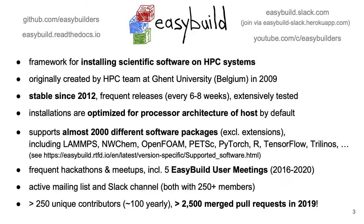Let's start with EasyBuild, which is a tool for installing scientific software on HPC systems. It was created by the HPC team in Ghent back in 2009 and was first released publicly in 2012. Since then it has been widely adopted in the HPC community. Today it supports installing almost 2,000 different software packages, not including add-ons like Python packages or R libraries, and ignoring software versions. Among these are several notorious applications when it comes to getting them properly installed, like OpenFOAM and TensorFlow when you want to install it from source code. There's an active mailing list and Slack channel, and throughout the years we have organized various meetups, including EasyBuild user meetings in the last five years. So it's a very vibrant community.